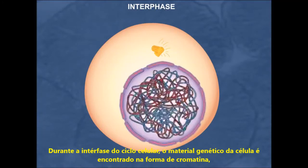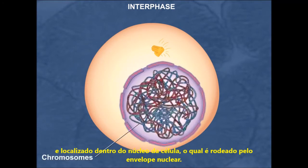During interphase of the cell cycle, the genetic material of the cell is found in the form of chromatin and located within the nucleus of the cell, which is surrounded by the nuclear envelope.